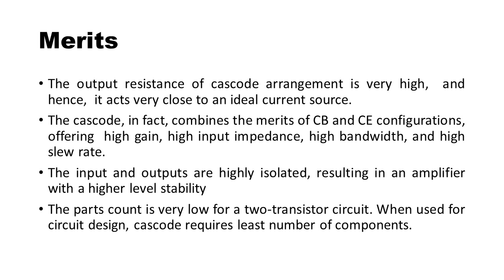The merits of the cascode amplifier are given below. The output resistance of the cascode arrangement is very high and hence it acts very close to an ideal current source. The cascode in fact combines the merits of CB and CE configurations, offering high gain, high input impedance, high bandwidth, and high slew rate. The input and outputs are highly isolated, resulting in an amplifier with a higher level of stability.